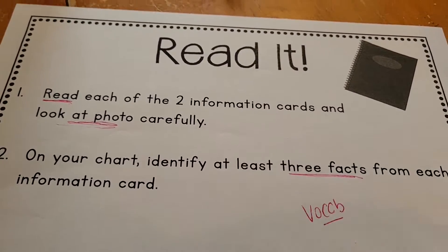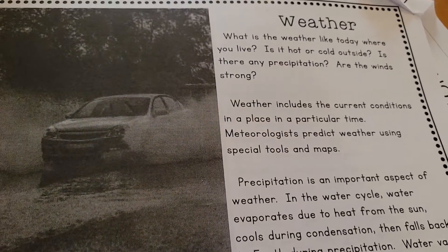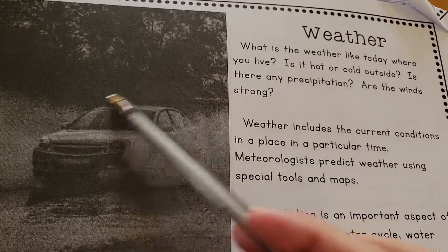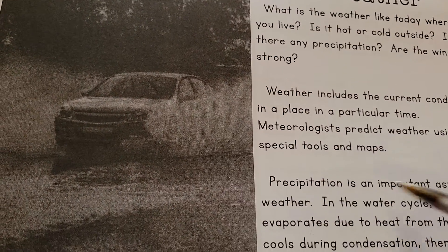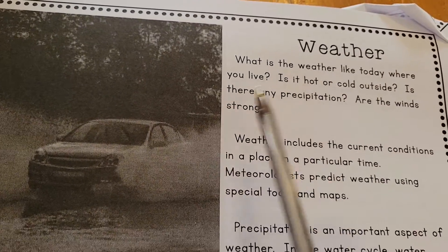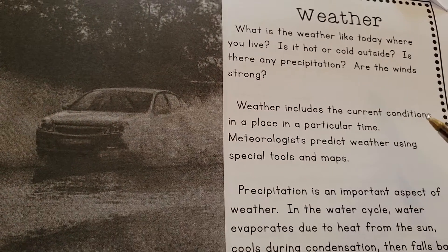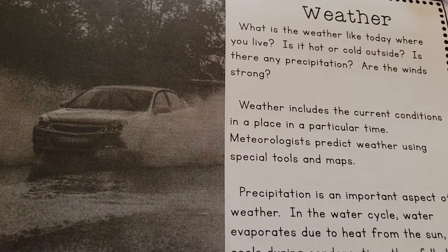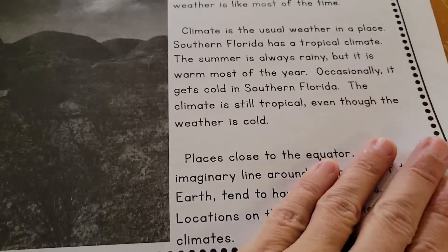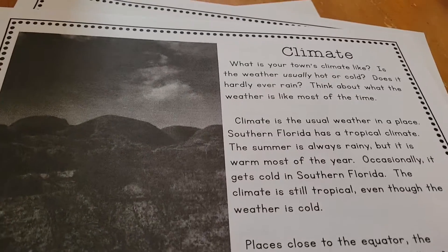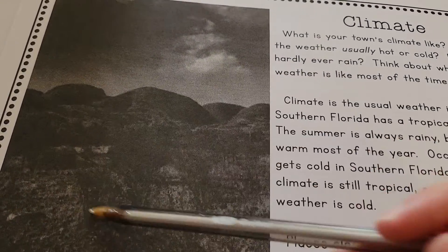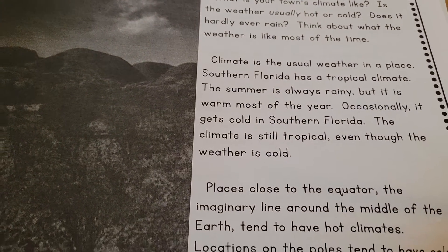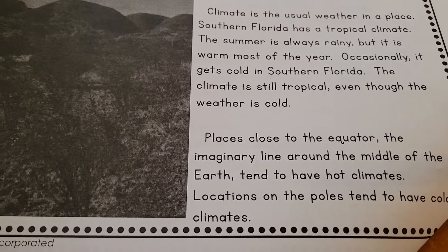These are the two readings that you're going to do. The first one is about weather. You're going to read through the passage, make note of the picture, and as you read through, maybe highlight some words that are new to you and some key ideas that you think are important for describing weather. Then the next page is about climate. Again, you're going to read through, look at the picture, highlight some words and new vocabulary, and underline some key phrases.